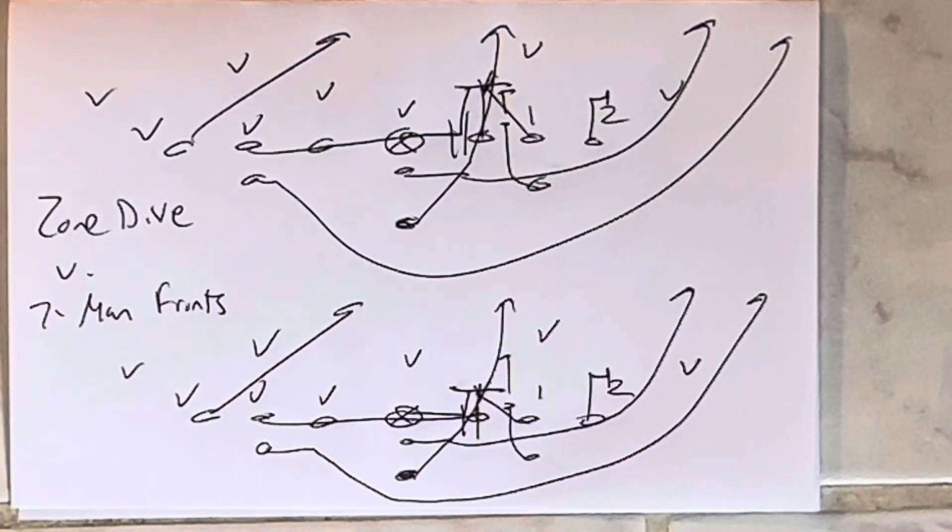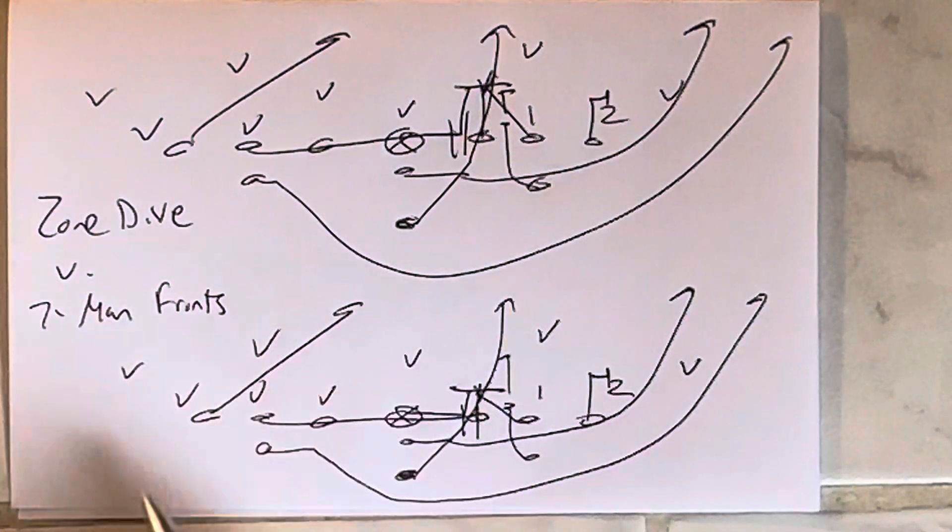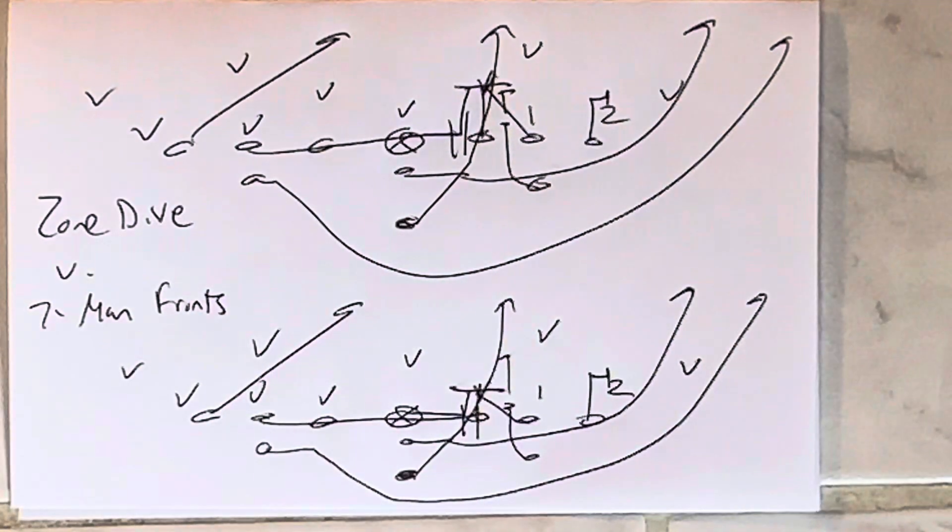And I learned this from Navy years ago. If they give you two safeties, the corners have to be the run support, so they can't really help on the zone dive. The safeties are too far off the ball to help on the zone dive. That means they've got seven people in the box, and you're triple-teaming one of them.